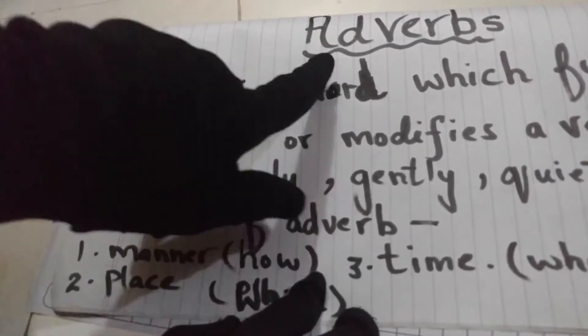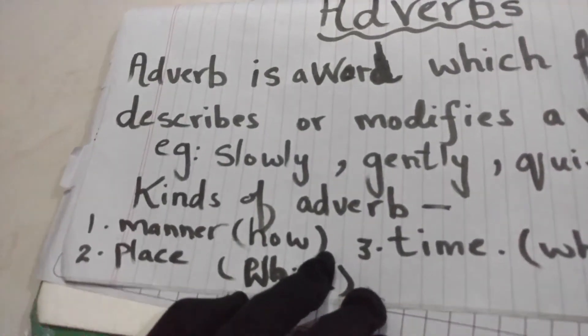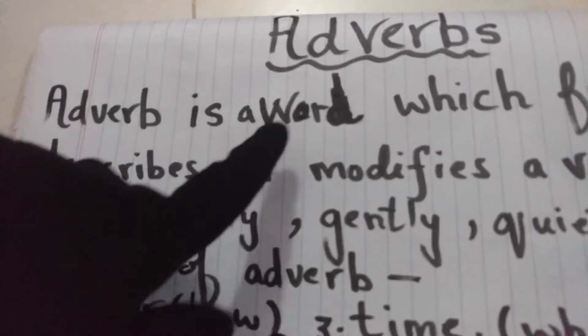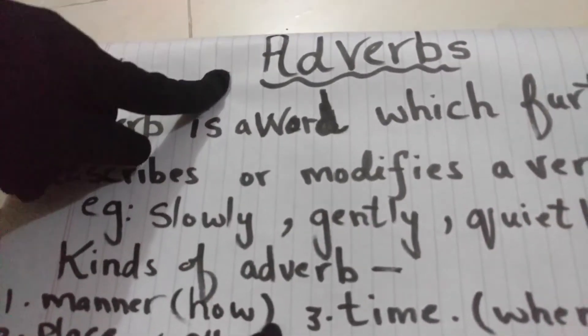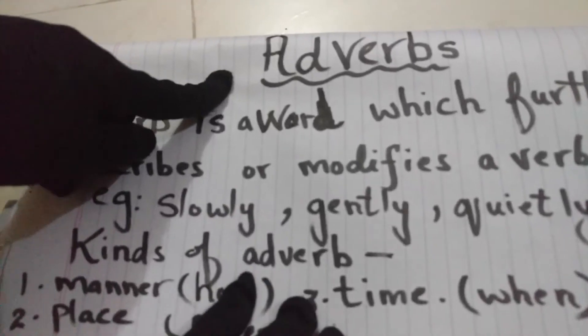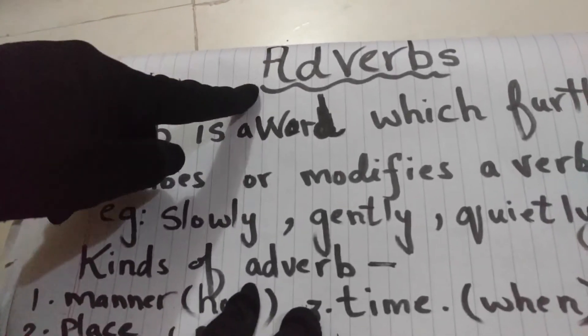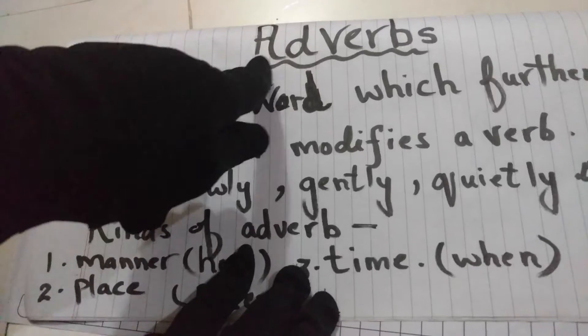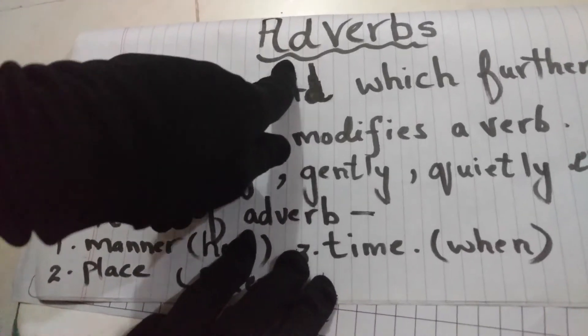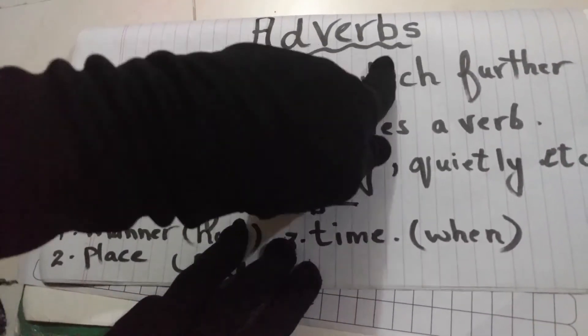Definition of adverbs. Now adverbs — just like the word suggests, we know it is related to verbs. We understand that adverbs give an addition, a short form add-on to verbs.